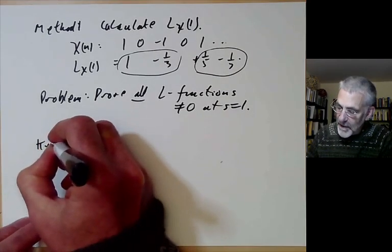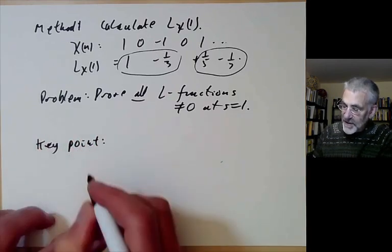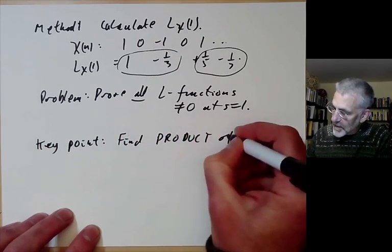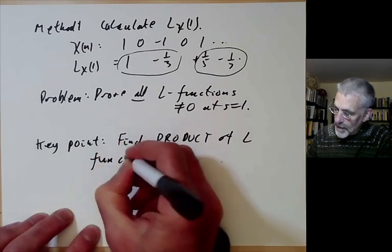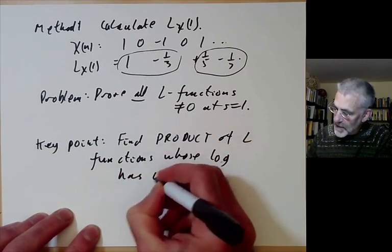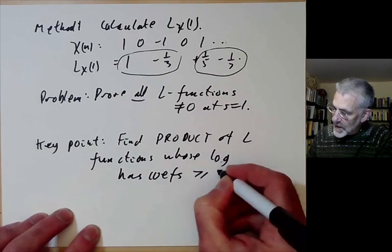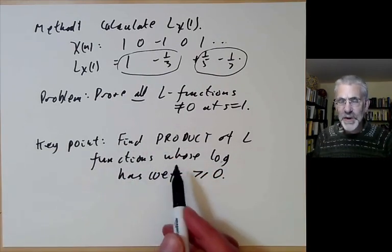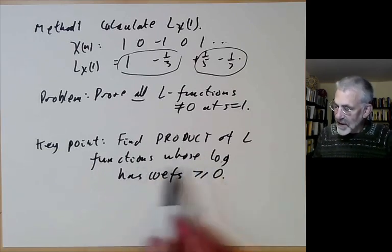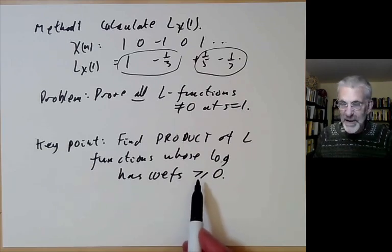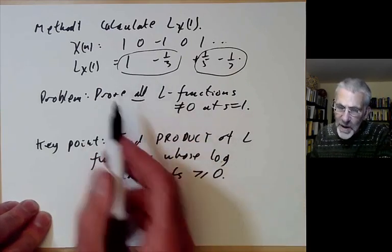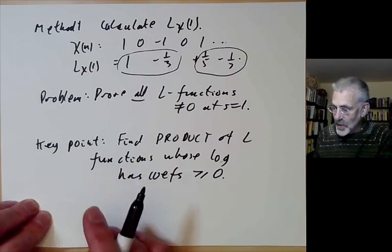A key point in the proof is to find a product of L-functions whose logarithm has coefficients that are all greater than or equal to zero. This idea turns up a lot: if you can find Dirichlet series with non-negative coefficients, that makes them much easier to handle. Although L-functions don't have non-negative coefficients in general, if you multiply them together in a clever way, you can sometimes arrange for this.